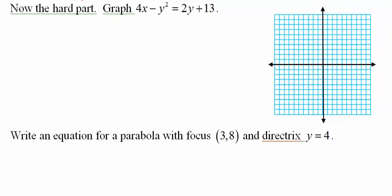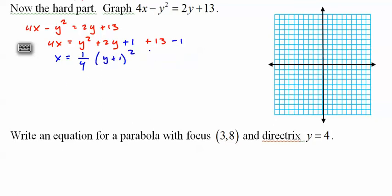Now, a tricky one, we have to manipulate a little bit. 4x minus y squared equals 2y plus 13. 4x equals y squared plus 2y. Complete the square, plus 1, minus 1. Divide everything by 4. x equals 1 fourth, y plus 1 squared. This was 12, divide by 4 is 3. So it's sideways again. Vertex is at 3, negative 1.